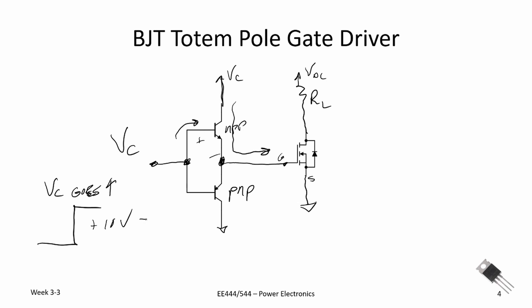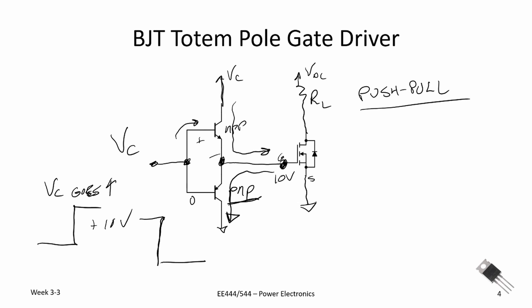When the control voltage goes back down to zero, the MOSFET will turn off, but the gate voltage will still be high at say 10 volts. As the control voltage goes to zero, we will now bias the lower PNP transistor on, which will pull current out from the gate. So sometimes the totem pole is called a push-pull amplifier — it pushes current into the gate to turn it on and pulls current out of the gate to turn it off, and it does not require much current from the control source.